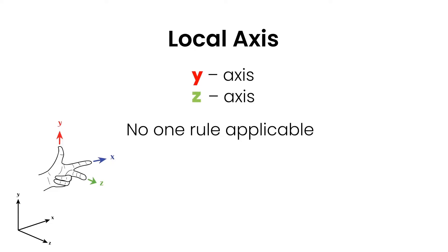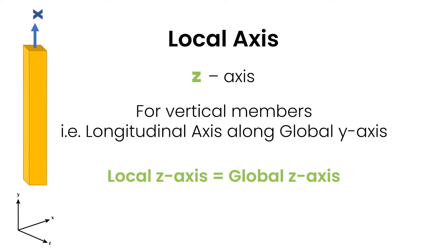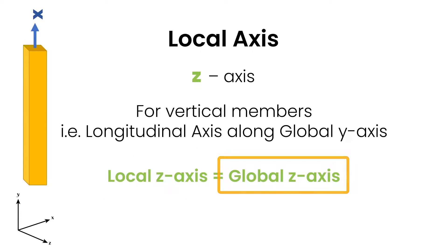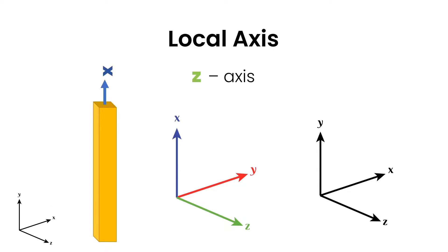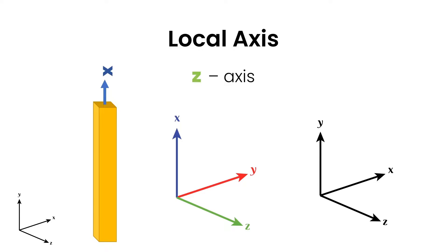Moving on to the Y and the Z axis — no single rule is universally applicable. For the Z axis, every vertical member whose longitudinal axis is along the global Y axis: in such cases, the local Z axis will be the global X axis, and both would be parallel. Graphically, if you have a vertical member, the local Z axis will be parallel to the global Z axis. So for every vertical member, the local Z axis and the global Z axis are along the same direction. When in doubt, use the left-hand rule.